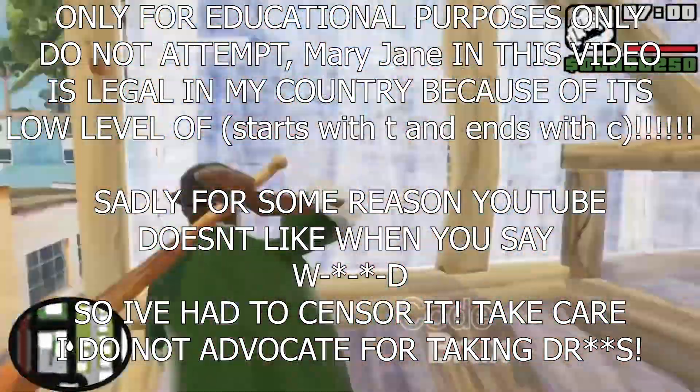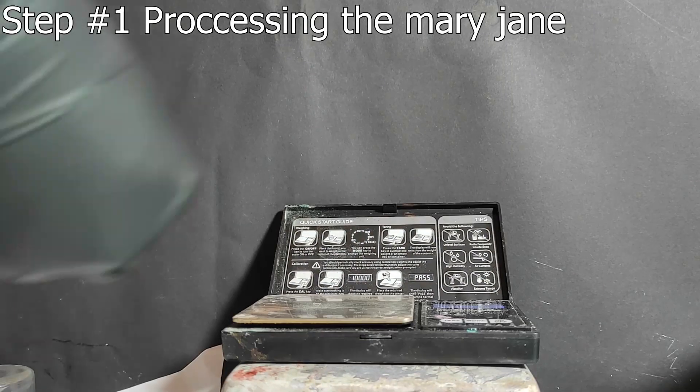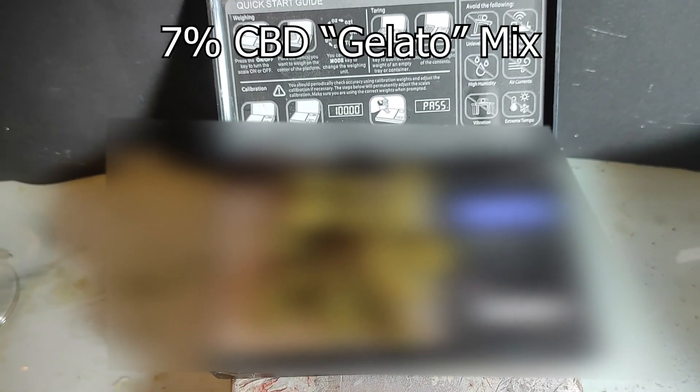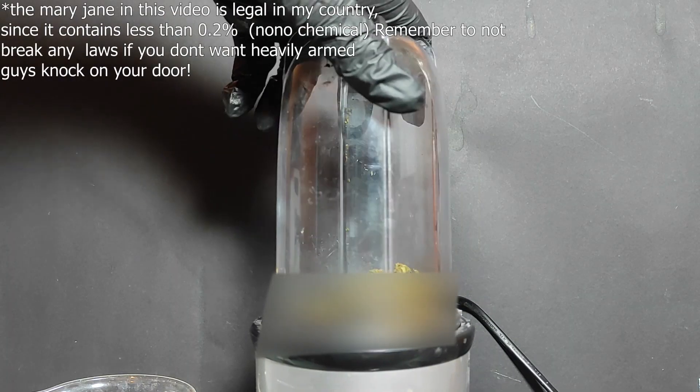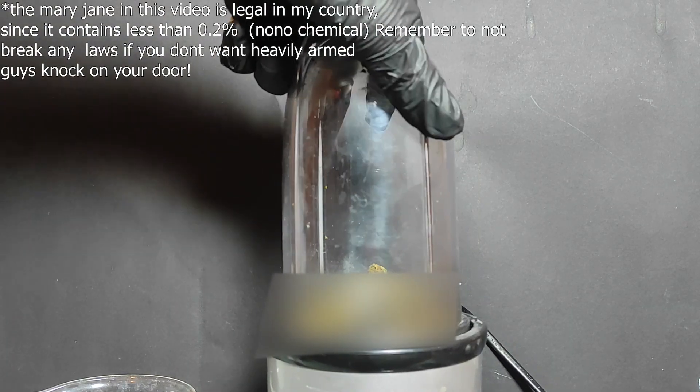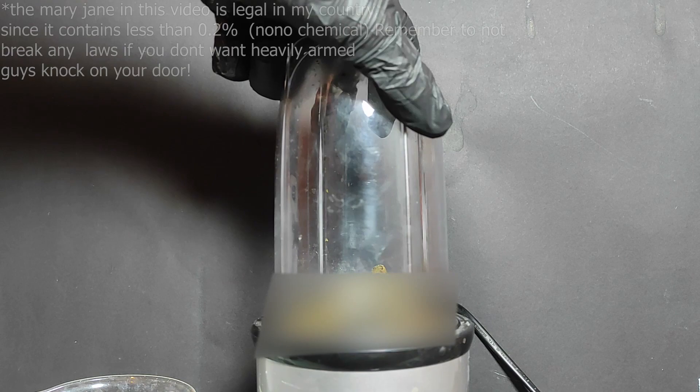This video has been done for educational purposes only. So here we have 5 grams of 7% CBD Gelato Mix M***** and to start I've decided to grind the w** in a coffee grinder. This will open up the h** and increase our yield.